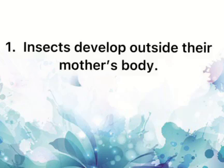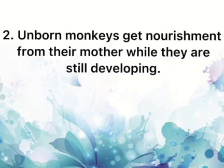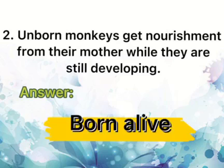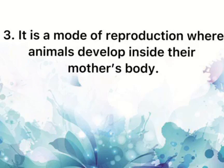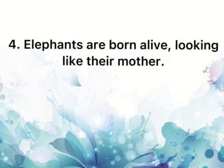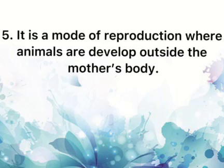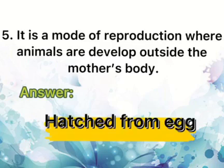Let's check the answers. 1. Insects develop outside their mother's body — hatched from eggs. 2. Unborn monkeys get nourishment from their mother while still developing — born alive. 3. Mode of reproduction where animals develop inside the mother's body — born alive. 4. Elephants are born alive, looking like their mother — born alive. 5. Mode of reproduction where animals develop outside the mother's body — hatched from egg.